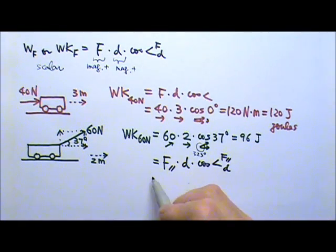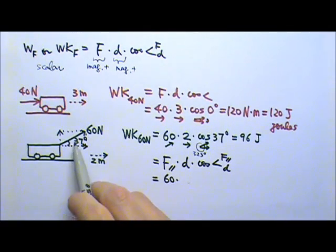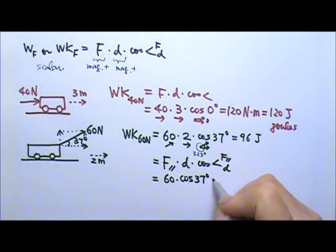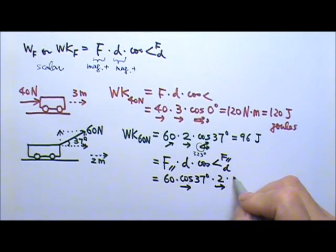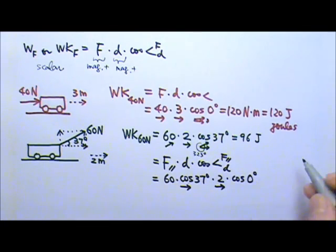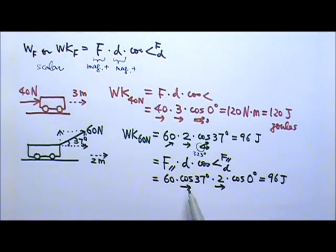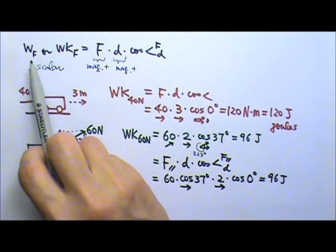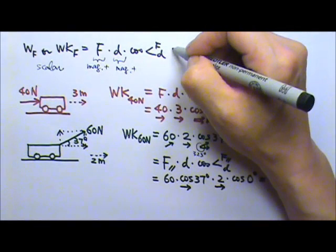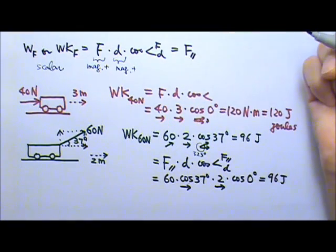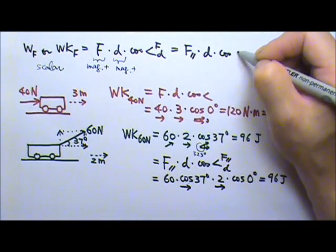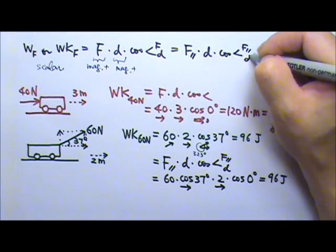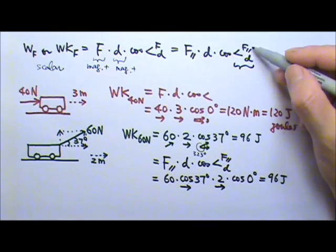The parallel component is the one that does the work. It is adjacent to the 37° angle, so the parallel component is 60 × cos 37°. The displacement is 2 meters. The parallel component goes to the right and the displacement goes to the right, so the angle between them is 0 degrees — cosine 0 is 1. This also gives us 96 joules. That's why we have cosine of the angle in the formula: the part of the force that does work is its parallel component.